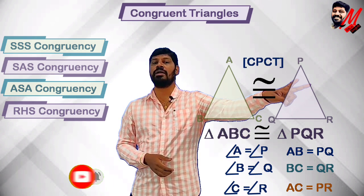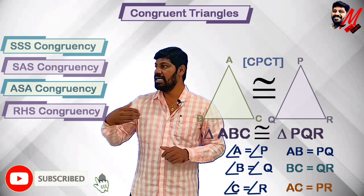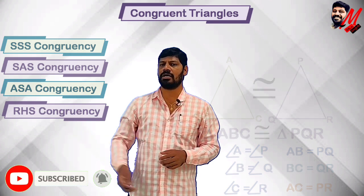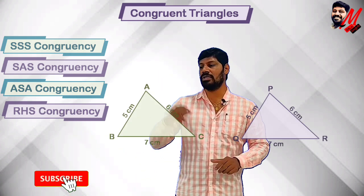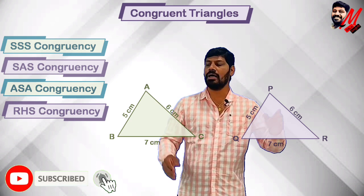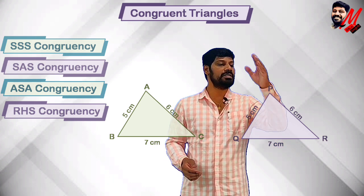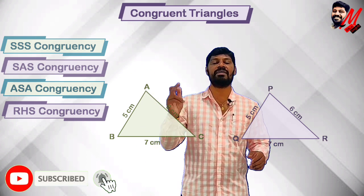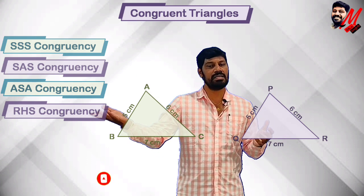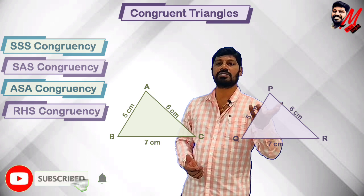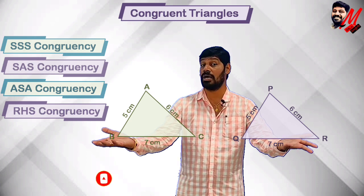The two triangles are congruent and we have different conditions like SSS, SAS, ASA, and RHS. For a brief SSS example: suppose triangle ABC has AB equal to 5, BC equal to 7, and AC equal to 6; and triangle PQR has PQ equal to 5, QR equal to 7, and PR equal to 6. Since all three sides are the same size, the two triangles are congruent.